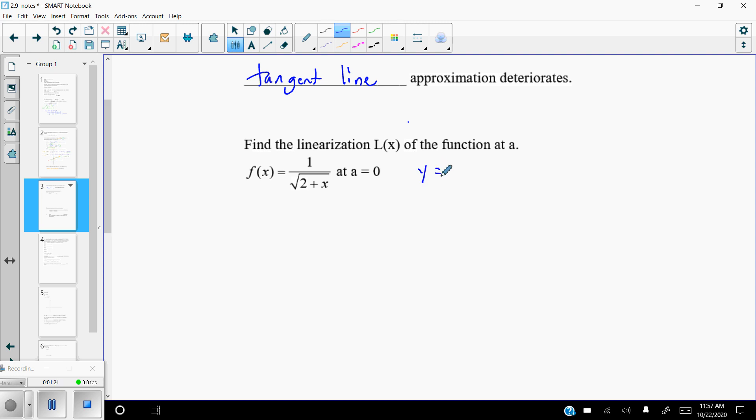Y is going to be what you get when you plug in your x value. If I plug in 0 for x, I'm going to get 1 over the square root of 2. It's not a really nice y value, but that's the y value. And then we need the slope.